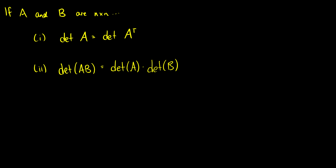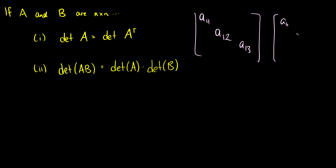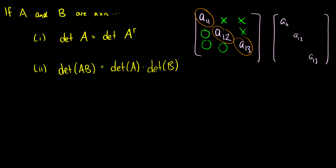Two more properties. First, the determinant of A equals the determinant of A transpose. To see why intuitively, consider a matrix in upper triangular form — its determinant is the product of the diagonal entries. When you take its transpose you get a lower triangular matrix. For a lower triangular matrix the determinant is also the product of the diagonal entries, which are the same diagonals. Therefore the two determinants are equal.